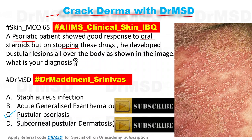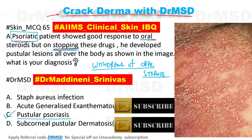In this question, the key clues are that the patient is a psoriatic patient who showed good response to oral steroids, but on stopping these drugs pustular lesions developed. This clearly indicates withdrawal of oral steroids in a psoriatic patient — a very important clue.